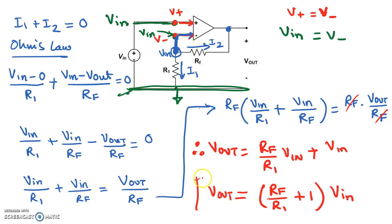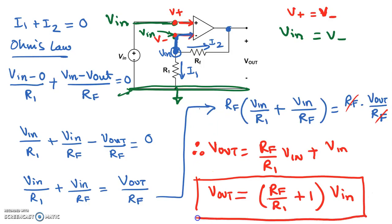Looking at this result, the output voltage Vout equals the ratio of resistors Rf and R1 plus 1, times Vin — just like before with Rf and R1. Note that the gain is not just the ratio like in the inverting amplifier case; the gain is the feedback resistor over the input resistor plus 1.